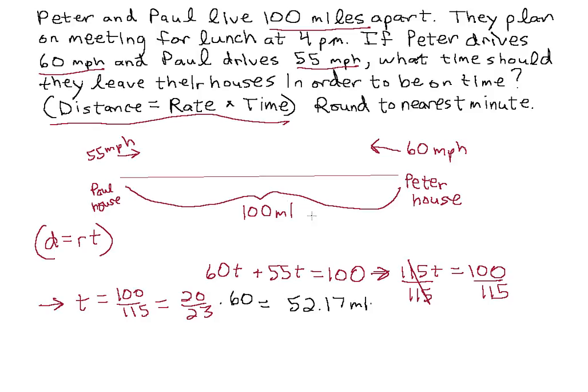So if Peter and Paul want to meet at 4 PM, they need to leave at 4 PM minus 52.17 minutes. And that would be somewhere around 3:08 PM. You don't want to leave at 3:09 because you'll be late. So they want to leave approximately at 3:08 PM. So this is a simple distance problem.